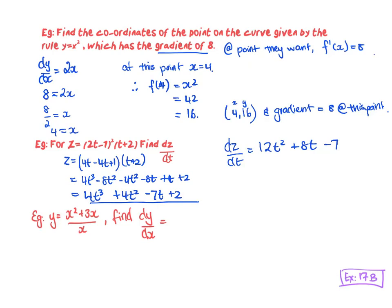For the one underneath, we need to simplify first. If you factorize the top term over x, you can see you can cancel them down. So y can actually just be written as x plus 3. Therefore dy/dx is just 1. That makes sense — this is a linear graph, so the gradient is the same all the way through, and that is 1.